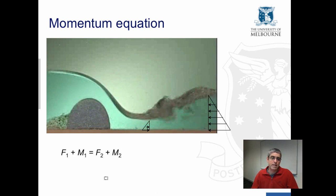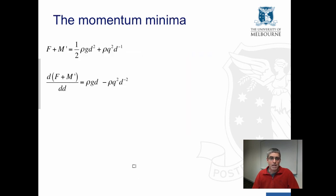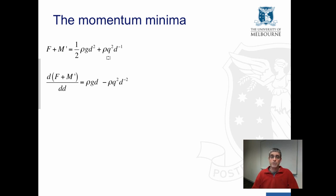We can write that mathematically as: the sum of hydrostatic force and momentum on the upstream end of the hydraulic jump equals the hydrostatic force plus momentum at the downstream end of the hydraulic jump. So hydrostatic force plus momentum is a constant when looking at two locations upstream and downstream of a hydraulic jump. That gives us the basis for developing the momentum equation. The momentum equation is a function of depth squared and the inverse of depth, which is quite similar to the specific energy equation, so perhaps there's a minima in this equation as well.